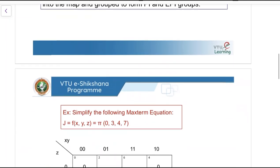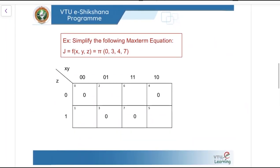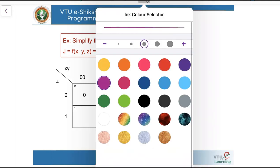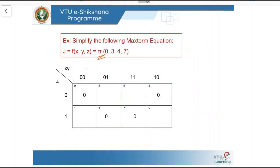Let us solve some examples. This is a 3-variable K-map expression. The example is: simplify the following max term equation — J equals f of XYZ equals pi of 0,3,4,7. Remember, for max term we use pi notation, whereas for min term we use sigma. Pi indicates it is for the max term and sigma indicates it is for the min term.